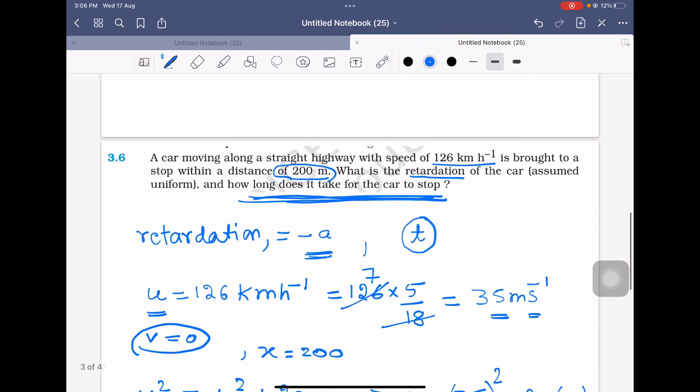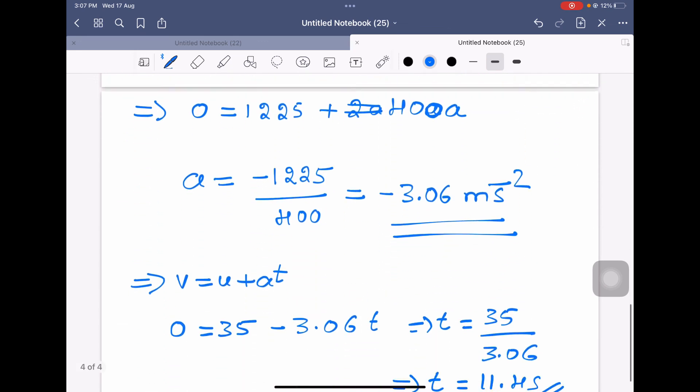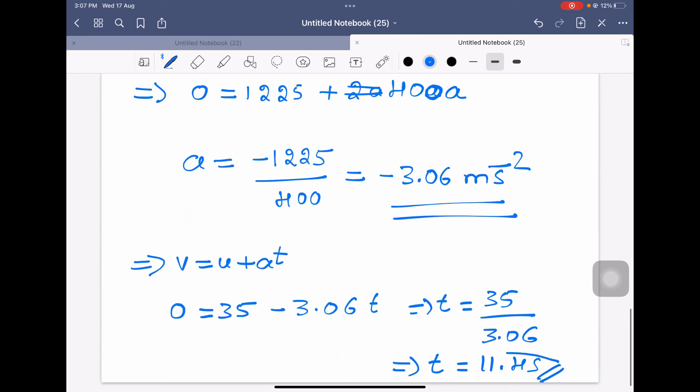So what is the question? What is the retardation of the car? Retardation means negative acceleration. We got acceleration equal to minus 3.06. Therefore, retardation is 3.06 meters per second squared. The car stops in 11.4 seconds.